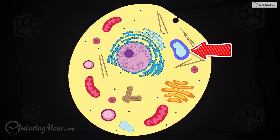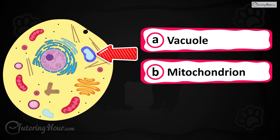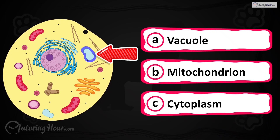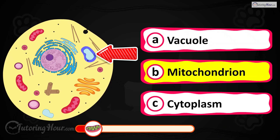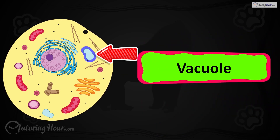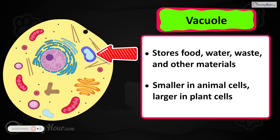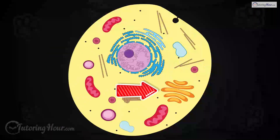Can you identify the highlighted part in the cell? Is it A) vacuole, B) mitochondrion, or C) cytoplasm? The correct answer is the vacuole. It stores food, water, waste, and other materials. Animal cell vacuoles are smaller compared to plant cell vacuoles.